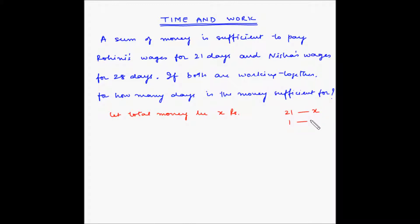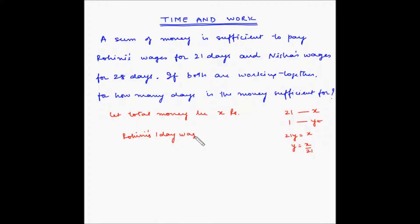So what is the amount of money that she will make in one day? By cross multiplication, 21Y equals X, or Y equals X by 21. So Rohini's one-day wage is equal to X divided by 21 rupees, and similarly Nisha's one-day wage will be equal to X divided by 28 rupees.